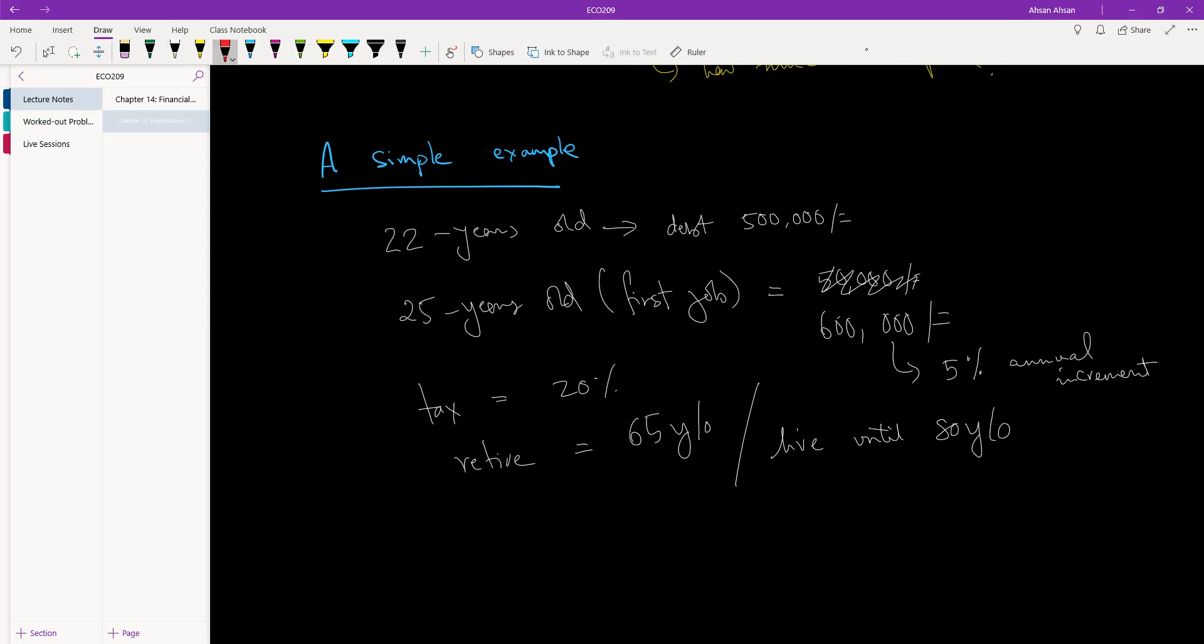So, these are important. You are 22 right now. You have a debt. You expect that you will start your first job three years from now. And you expect to earn $50,000 every month or $600,000 every year. You expect a 5% annual increase in your income every year. You expect to pay 20% tax on all your income. You will start working at 25. You will retire at 65. And you will die at 80.